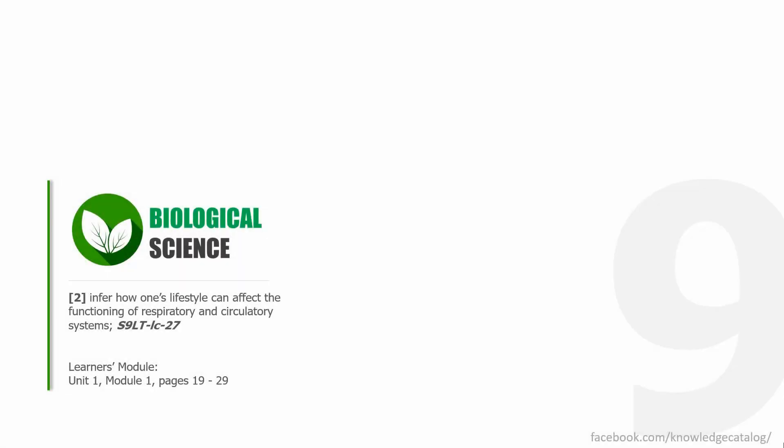Welcome to session number six. This is still biological science and we are going to finish our second learning competency which is inferring how one's lifestyle can affect the functioning of respiratory and circulatory systems. If you have your learners module with you, open it to unit one, module one, pages 19 to 29.